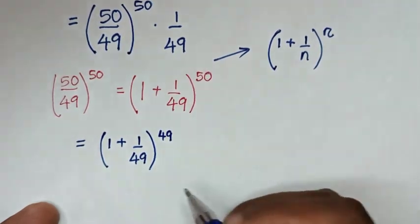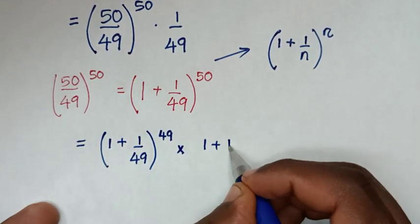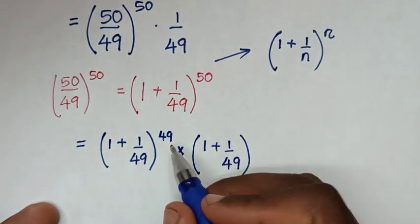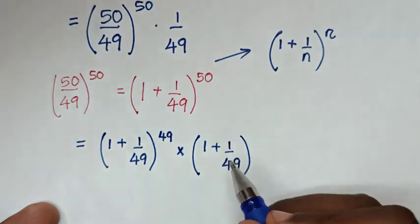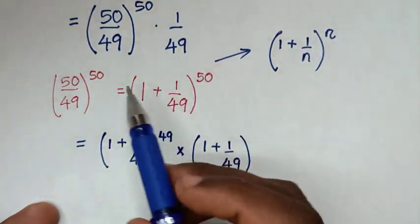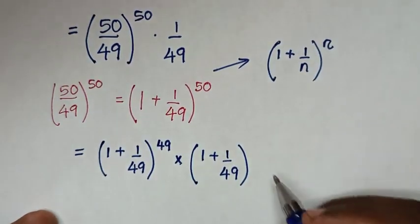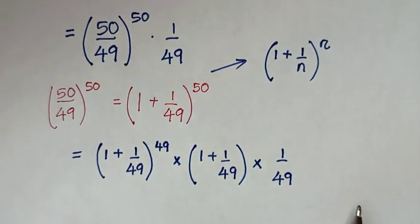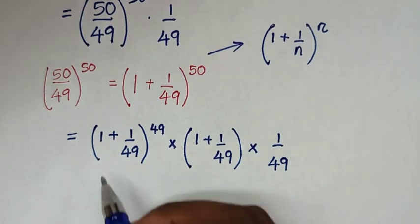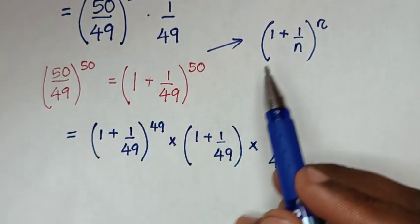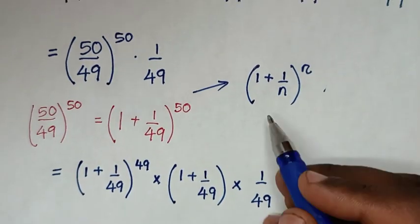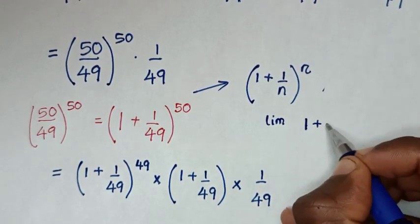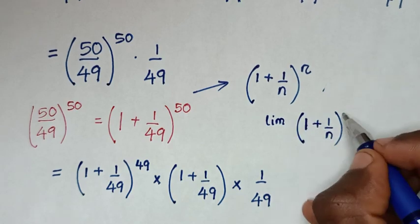Instead of power 50, we use power 49 and then multiply by (1 plus 1 over 49) power 1, so that 49 plus 1 gives power 50. This makes it equal to the Euler's form expression, then multiplied by 1 over 49.